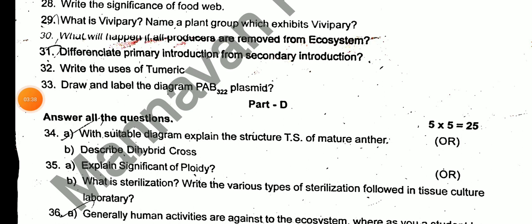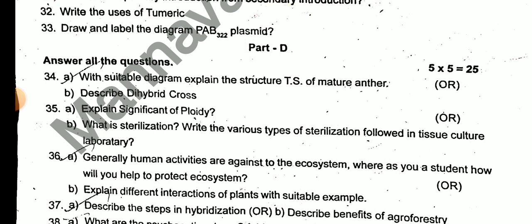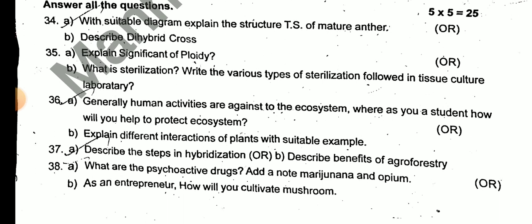For the 5-mark questions (5 x 25): With a suitable diagram, explain the structure of TS mature anther. Describe the dihybrid cross. Explain the significance of ploidy. Write what is sterilization and its various types as followed in a plant tissue culture laboratory. Generally, human activities are against the ecosystem — how will you protect the ecosystem? Explain the different interactions between plants with suitable examples. Describe the steps involved in hybridization. Describe the benefits of agroforestry. What are the psychoactive drugs? Add a note on opium. As an entrepreneur, discuss mushroom cultivation.